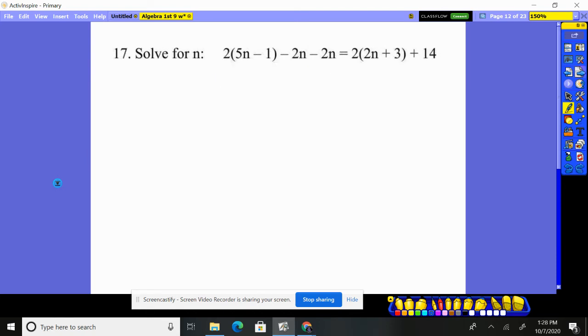Okay, got to just use the distributive property here, and then combine like terms. So we'll distribute through right here. That'll be 10n, take away 2, take away 2n, take away 2n. Distribute through here, 4n plus 6 plus 14.